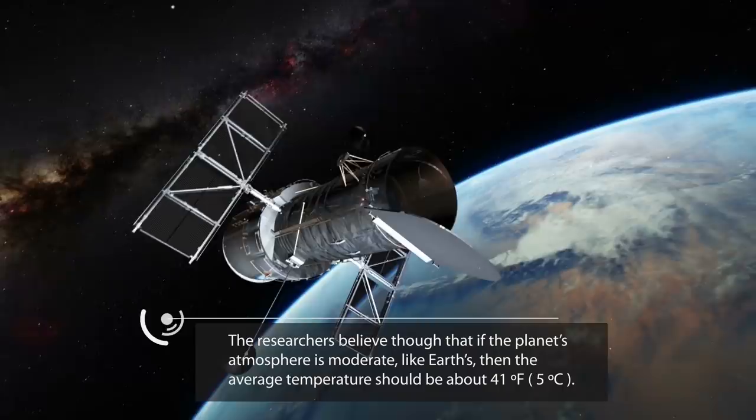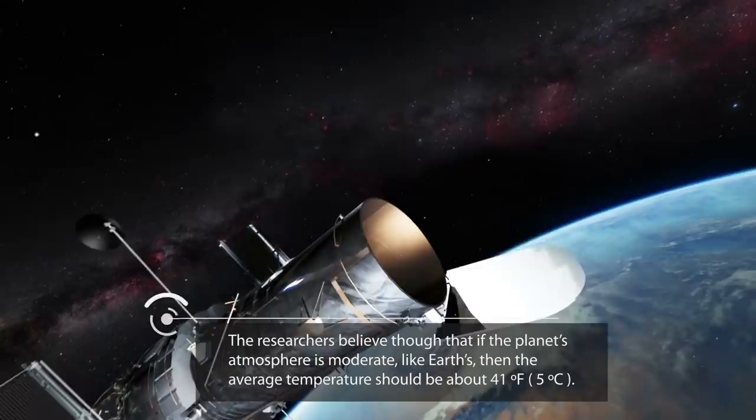The researchers believe though that if the planet's atmosphere is moderate like Earth's, then the average temperature should be around 41 degrees Fahrenheit, which would make it a bit colder than we have here on Earth, but it wouldn't be impossible to live on, obviously.